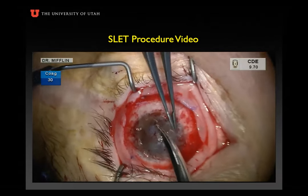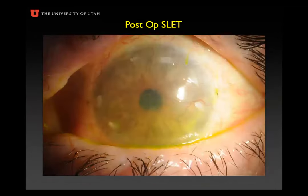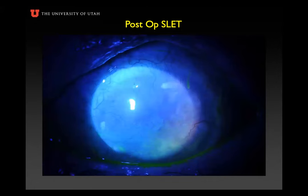This surgery can be done with just a bandage contact lens or amniotic membrane over the slight donor tissues — in this case we used two layers of amniotic membrane. This shows the fellow's eye about a month or two after surgery. You can kind of still see peripherally the little islands of donor tissue that have stayed in place. Even though his cornea looks pretty hazy, he improved about five lines — from around 20/400 to about 20/60 to 20/80 with refraction and about 20/80 to 20/100 without. He decided it was good enough that he didn't want to do a cornea transplant.